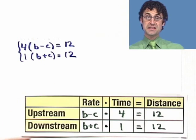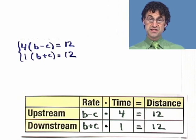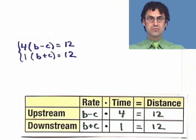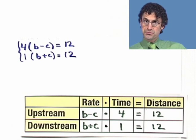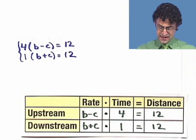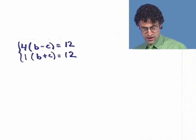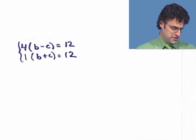So this is my system of equations that I want to solve. And when I figure out what b equals, that's going to be Ben's rate in still water. And c actually will represent the rate of the current. Cool. So we want to solve this. And I'm going to solve this by the technique of elimination, which means that I want to eliminate one variable. So we have to do some stuff to this.